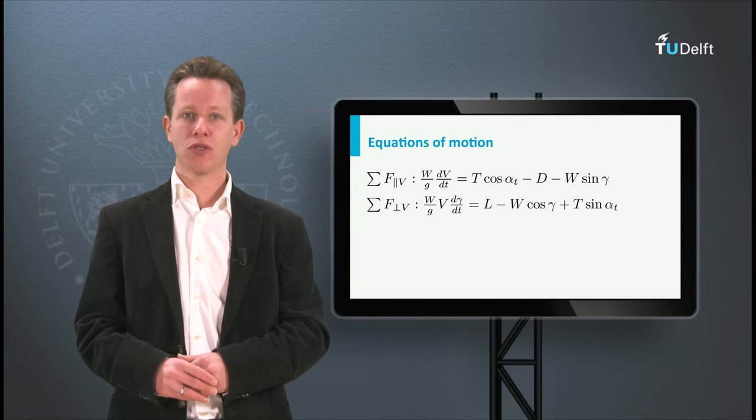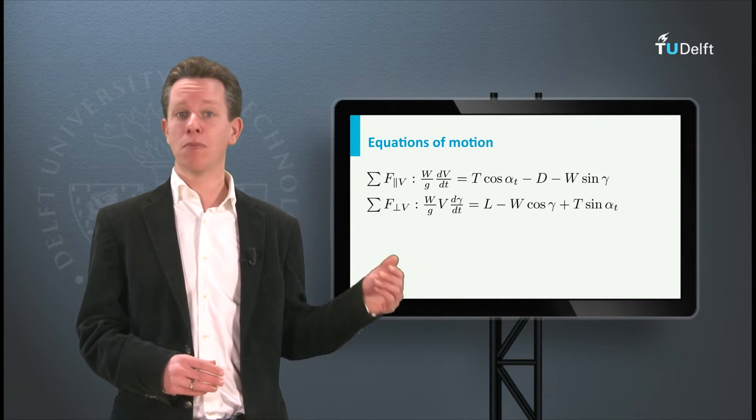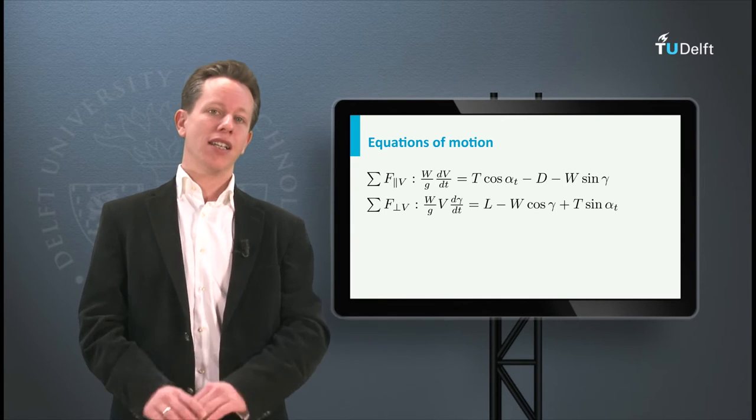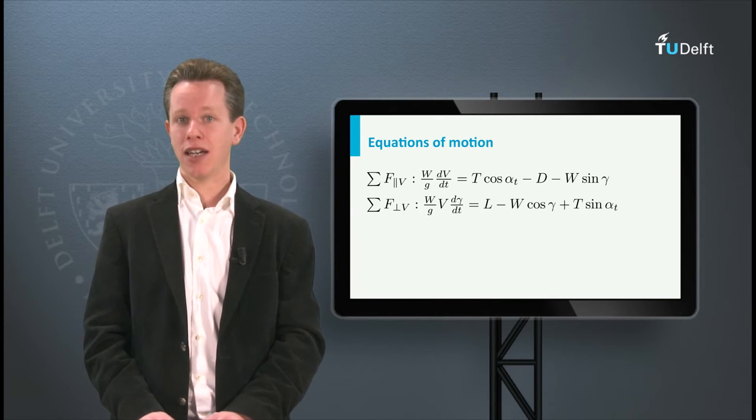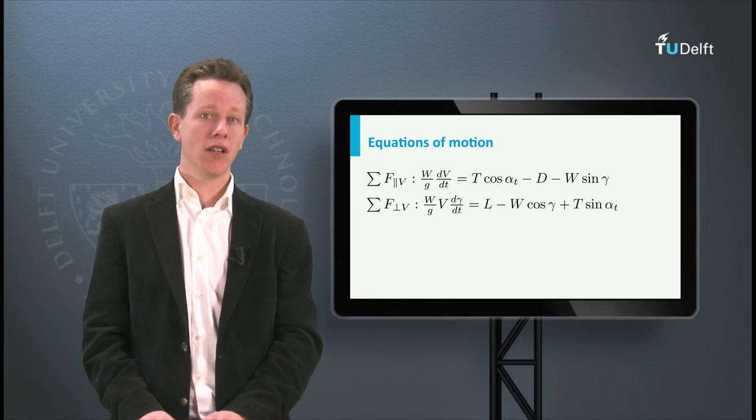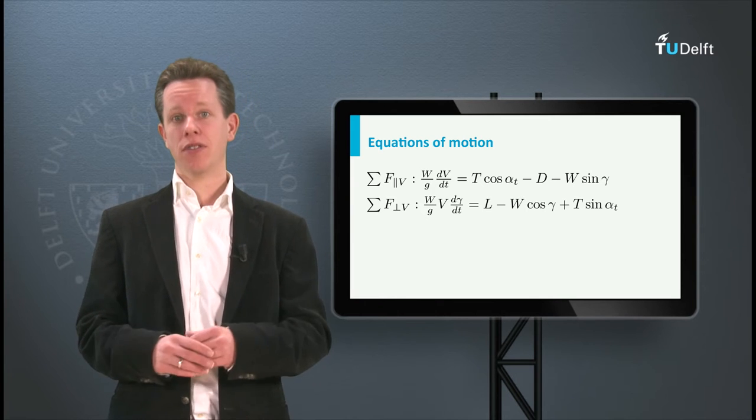Unfortunately, it is not possible to solve a set of two equations with more than two unknowns. In the last video we determined that it is possible to express the aerodynamic drag as a function of airspeed under the assumption that lift equals weight.